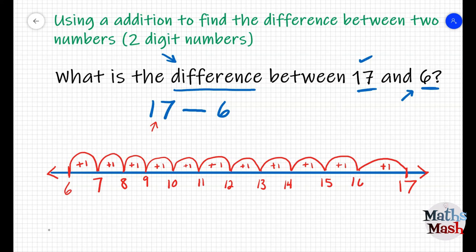I now add each of these hops. So, one plus one plus one plus one and so on makes... What did you come up with? Well, I came up with 11. So, now I can finally write my answer to the number sentence here. 17 subtract 6 is 11.